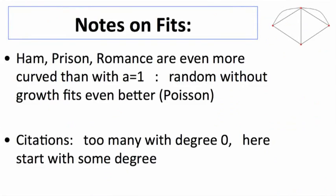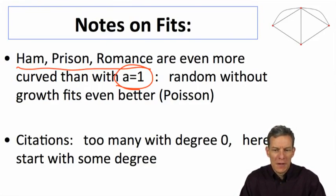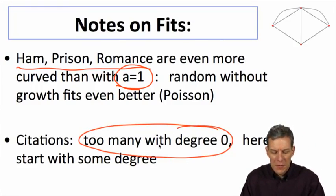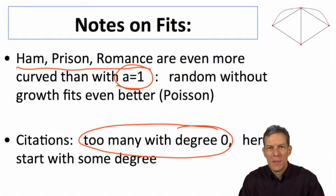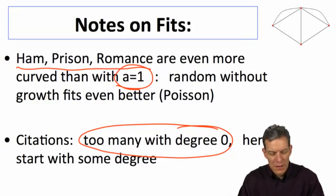Just a couple of notes on these fits, some of these are actually even more curved than with A equals 1, and in those cases, it could be that instead of having this growing network model, if you go back to the static uniformly at random model, you can even do a better fit. So those are fit better even by not including some of the growth, so the growth isn't a major factor in those. The citations network has too many with degree zero to fit.